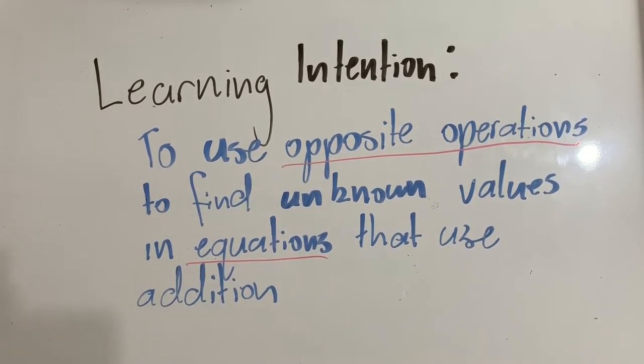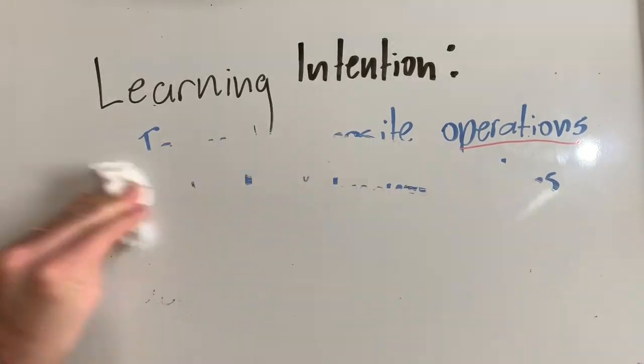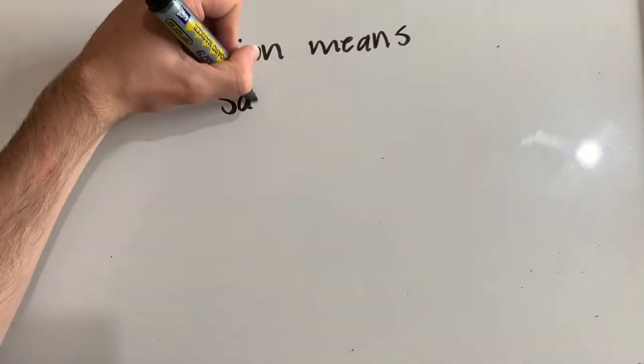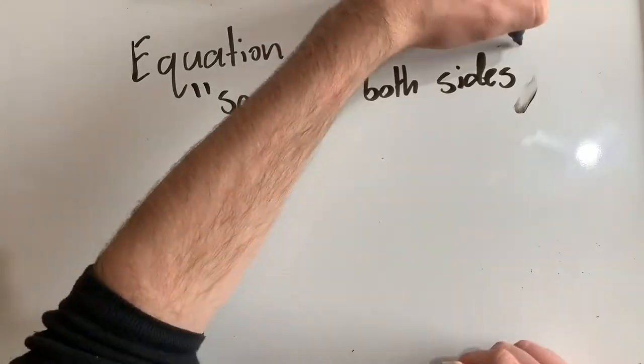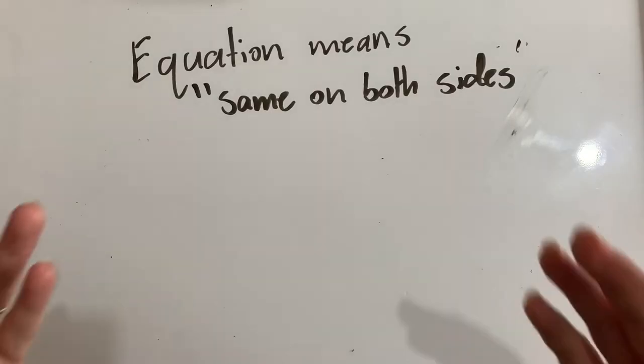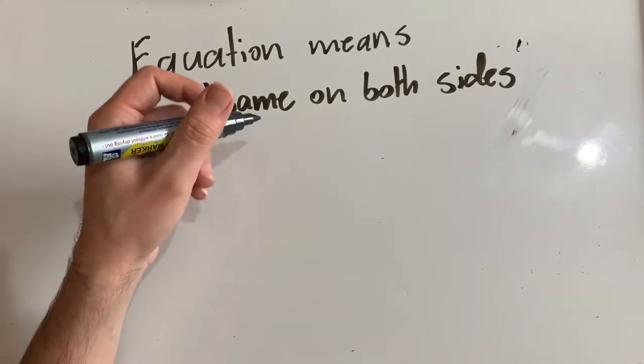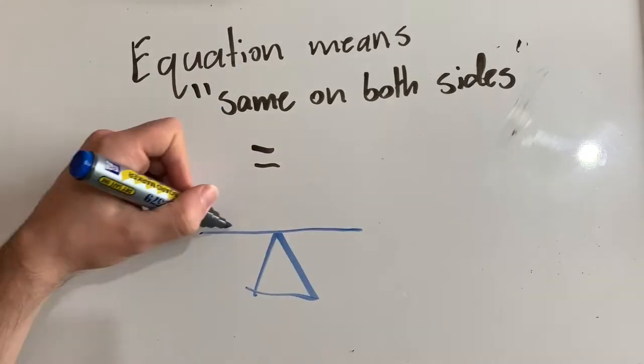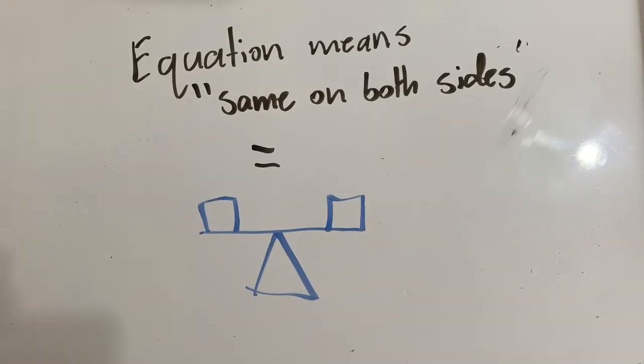Equation means same on both sides. Both sides are equal, and so we use an equal sign. It's as though we've got some scales and they are balanced. Each side is exactly the same, though they may look different.